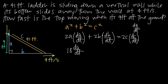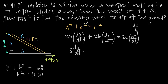Then we have plus 2b. We haven't been given b directly, but we know that a is 9 and c is 41 — c is always 41 because the length of the ladder doesn't change. Using the Pythagorean theorem: 9² + b² = 41², so 81 + b² = 1681. Subtracting 81 from both sides gives b² = 1600, and taking the square root gives b = 40. So we plug 40 in for b, getting 2 times 40, or 80.